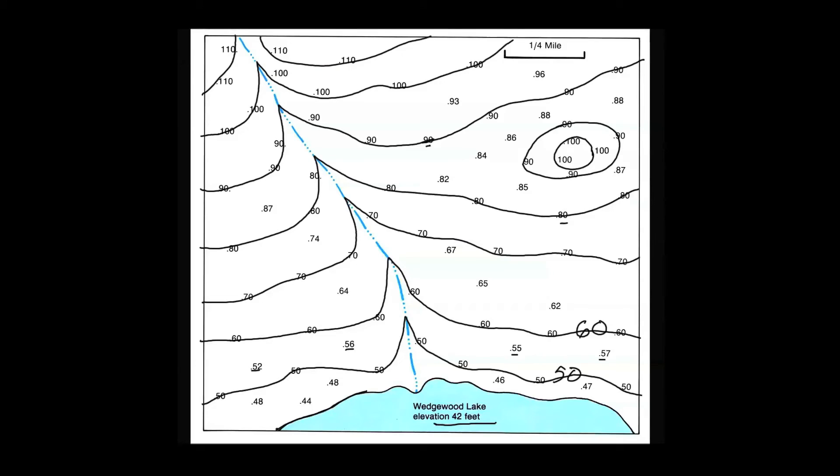Now you'll notice a couple things here. Contour lines never cross one another because they represent points of distinct elevations. Where contour lines close back on one another they always indicate a top of a hill.